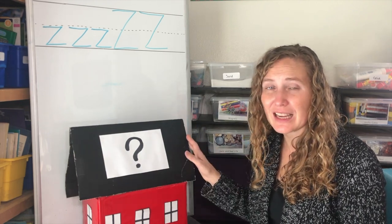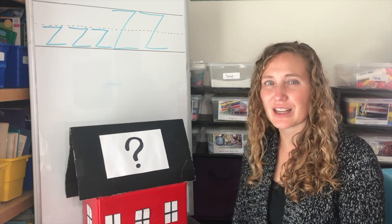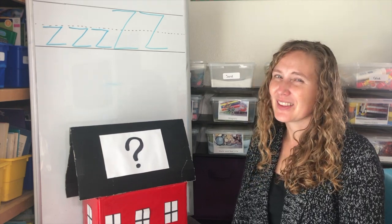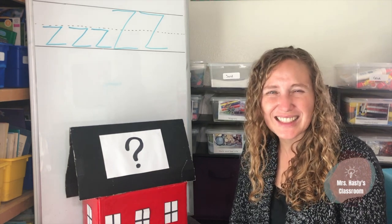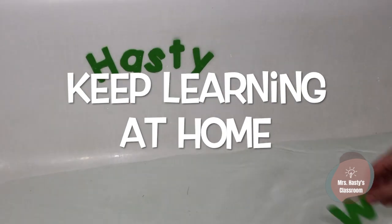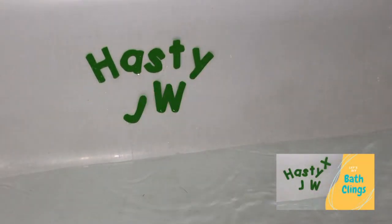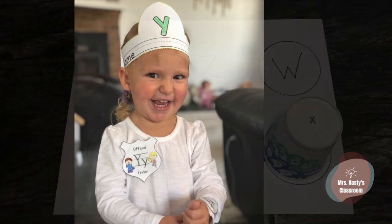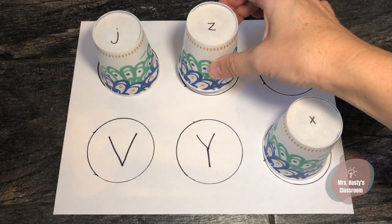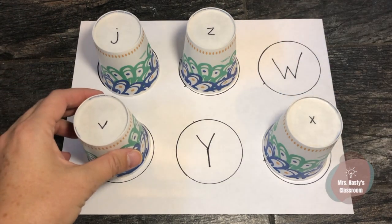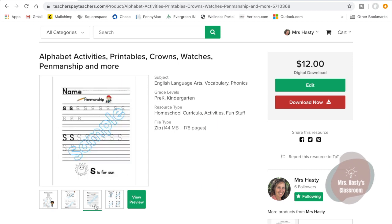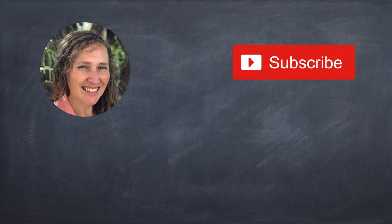Thank you for doing schoolhouse sort with me today. I wonder if you can look around your house and find some items that have the Z sound — that have the letter Z in them. Keep learning at home by doing letters or words with bath clings in the bathtub. Make a crown, a badge, or a watch with the letter that you're focusing on. Use paper cups and a piece of paper to do upper and lowercase letter matching. And there are always printable resources available at my teacher store at TeachersPayTeachers.com. Don't forget to subscribe!